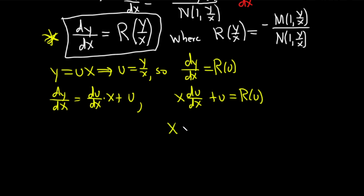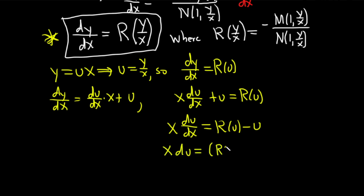This should be separable, so let's try to separate it. Subtract u from both sides: x(du/dx) = R(u) − u. Multiply by dx: x du = (R(u) − u) dx. The goal is to show that our boxed equation is actually separable. We've made a substitution, done some mathematics, and arrived at this point.